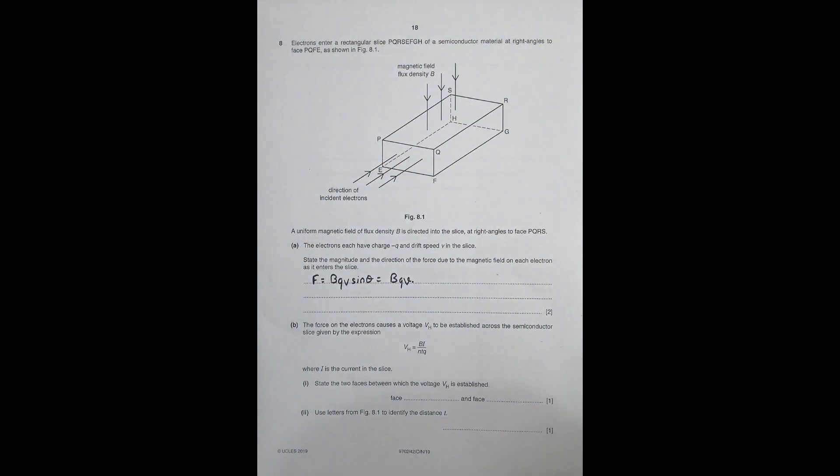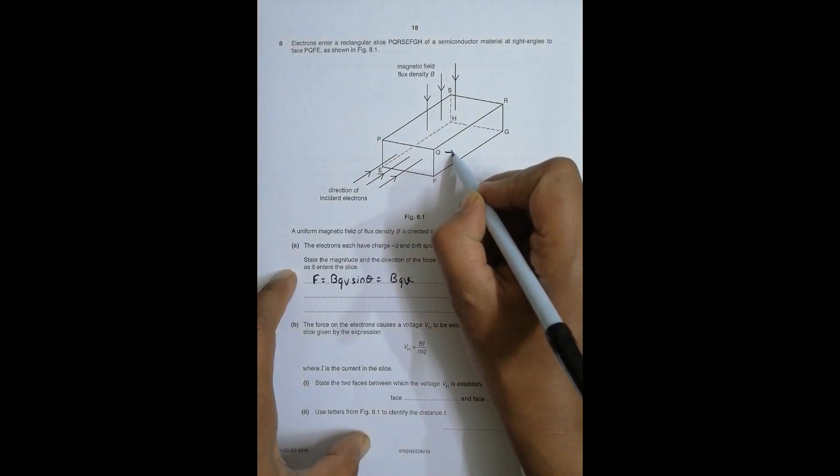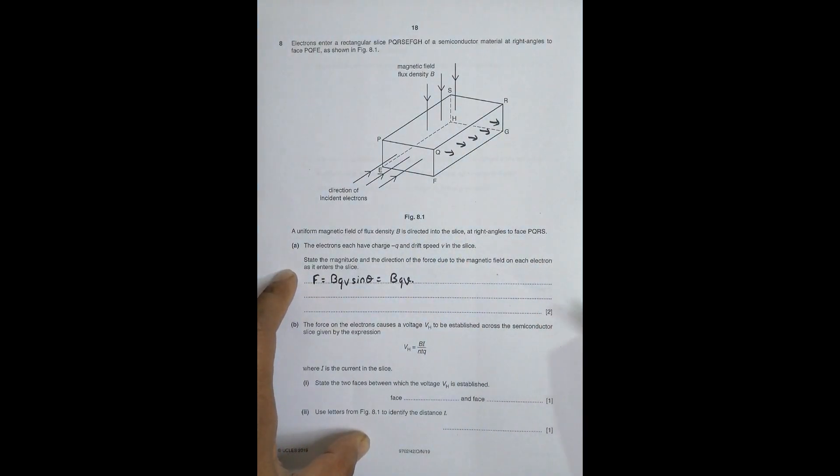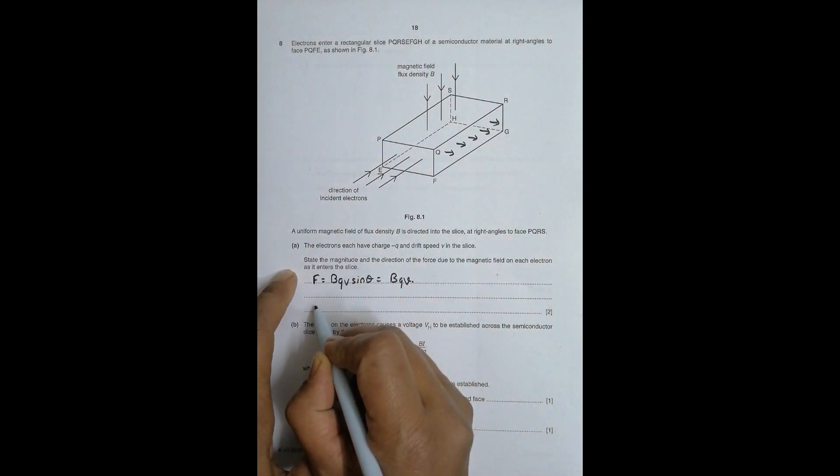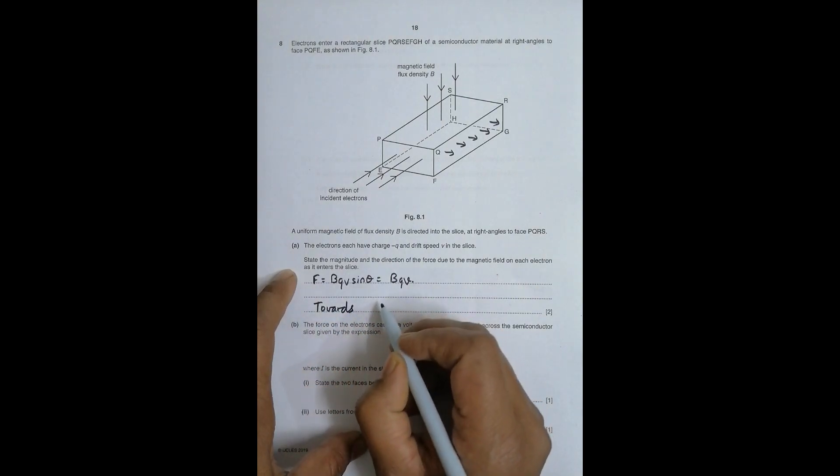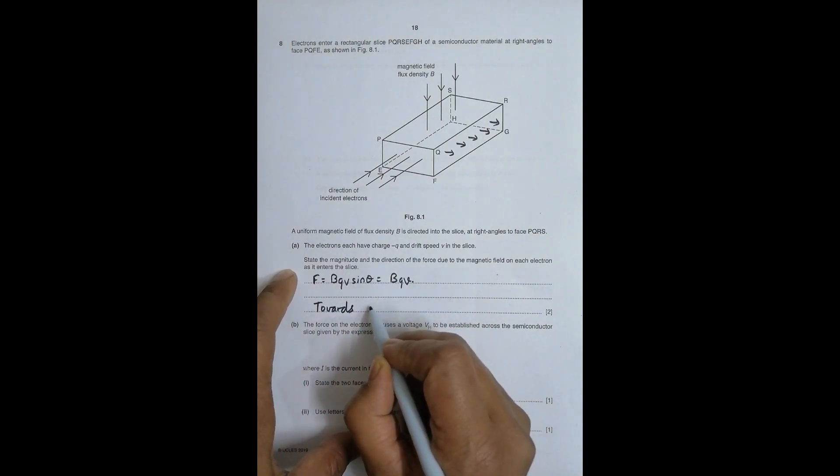So force should be this side. For the electrons going in here, the force will be to this side - this face. So in combined form, the force should be towards the face FGRQ.